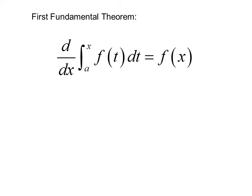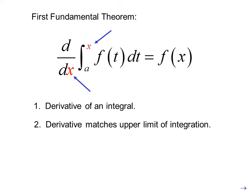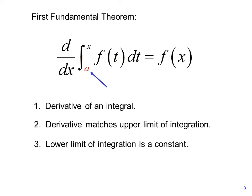In its most basic form, the first fundamental theorem has the following characteristics: we are taking the derivative of an integral; the derivative matches the upper limit of integration; the lower limit of integration is a constant; and we end up with a new variable — that variable was the upper limit of integration.